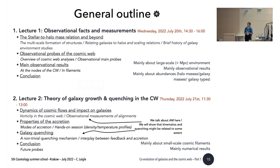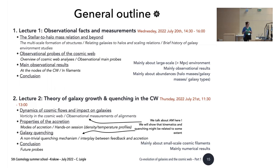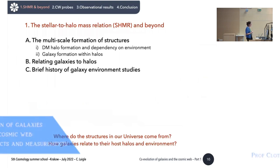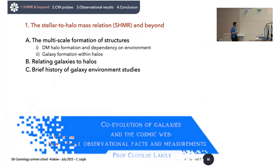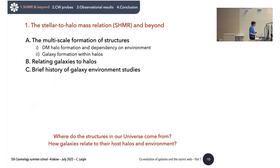This is the main outline of the lecture. Today we are going to discuss the classical view of galaxies within the halo and the relation between galaxies and the local density. Then we will go one step further and look at observational probes of the cosmic web, and correlate galaxy properties to the cosmic web mostly from observational research.